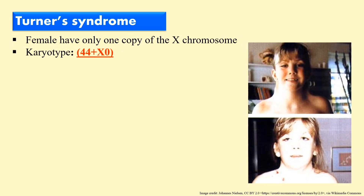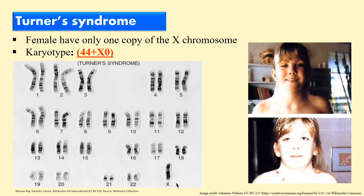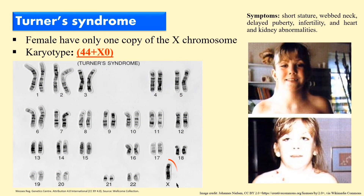Next, Turner syndrome. This is due to the absence of an X chromosome in the female individual. Generally, the normal female karyotype is 44 plus XX, but in Turner syndrome one X is missing, so the karyotype is 44 plus X0. As you can see in this karyotype, there is only one X chromosome, whereas females normally have two.